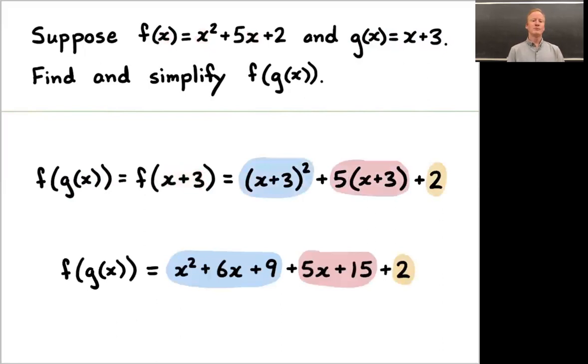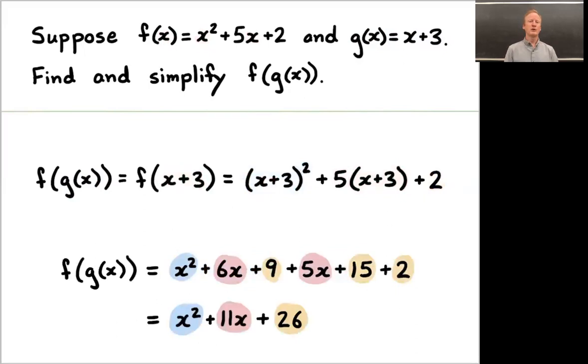x plus 3 squared, you can multiply that out using FOIL or any other technique, and you'll find that it's x squared plus 6x plus 9. 5 times x plus 3, use the distributive law, you'll get 5x plus 15 and 2 is just 2. Now we want to regroup terms and simplify. x squared is just x squared, but 6x and 5x you can combine to make 11x. 9 plus 15 plus 2 is 26. So f of g of x is x squared plus 11x plus 26.